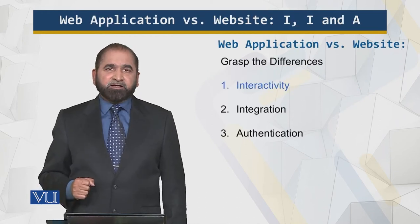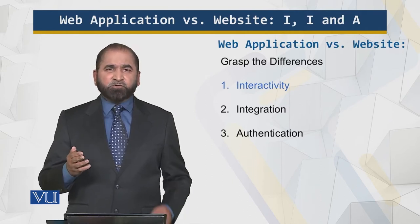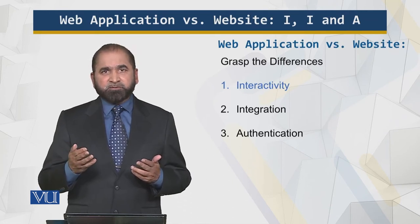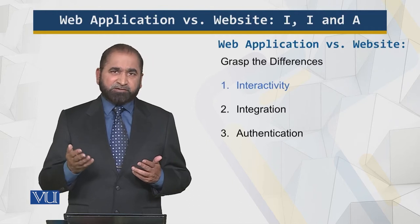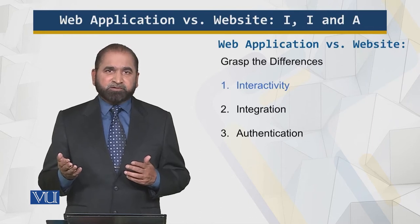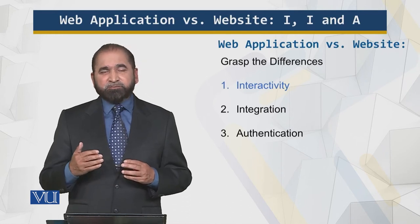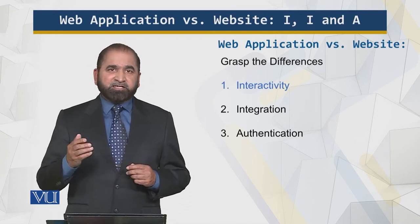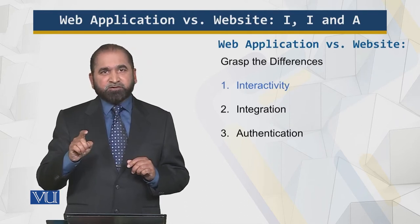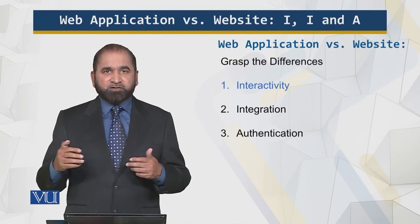Interactivity. For a website, a user goes there and looks at the data, reads the material, reads the news, or looks at content — and the contents of the page cannot be changed by the user; they are not required to be changed. But for a web application, the user can press a button, type in a text box, click radio buttons, check boxes, and the contents change and are generated dynamically.